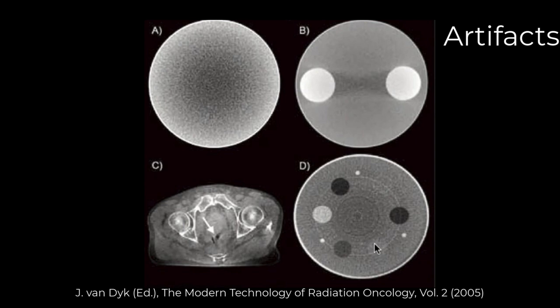On the lower right you have ring artifacts, due to a miscalibrated or not-functioning pixel or detector — you can imagine that would reconstruct to a ring, looking like a high density object in the reconstructed image. On the lower left are artifacts due to motion — this is a gas bubble that's moving during the scan. You can have motion from respiration or the patient might move; there are lots of different ways for motion artifacts to come into cone beam CT.